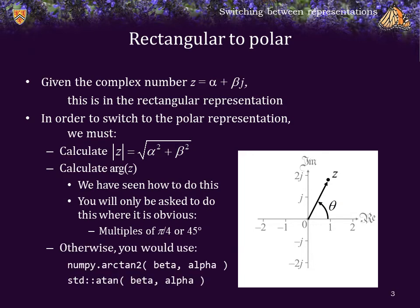Otherwise, if you were using a programming language to calculate this, you would use the two-argument arc tangent function. In Python, you would use numpy.arctan2 with beta and alpha as your arguments. Remember, tangent is opposite over adjacent, and so, in this case, the opposite is the beta. In C++, you would use the standard library function atan, again, with beta and alpha as your arguments.